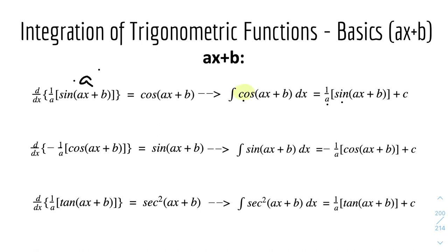So there are two things going on: the trig function — cos sign — and the coefficient. It's the same for sin and sec²: sin becomes minus cos, and you do 1 over the derivative of the bracket. Same applies for sec²(ax + b) giving 1 over a times tan(ax + b).